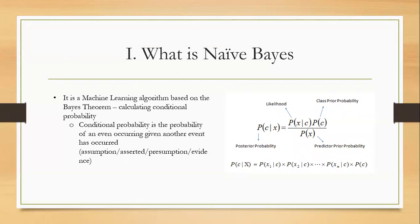The formula for this is given here. So the probability of C given X is equal to the likelihood, which is probability of X given C, times the class prior probability P of C, divided by the predictor prior probability, which is P of X.